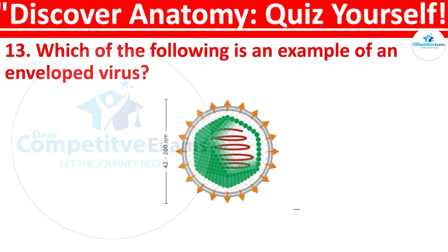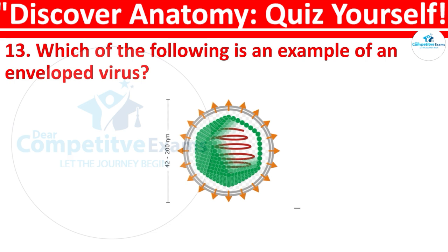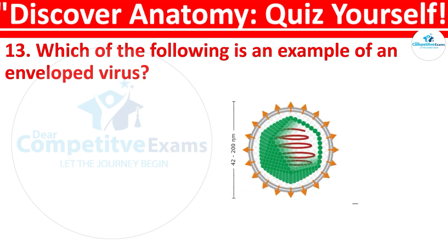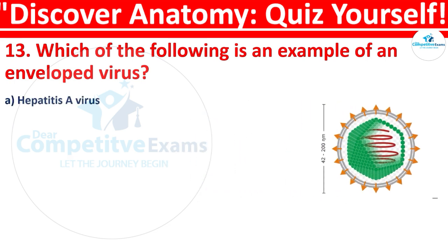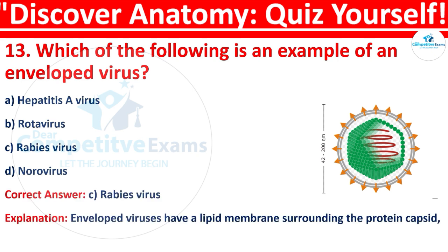Question 13: Which of the following is an example of an enveloped virus? The options are: Hepatitis A virus, Rotavirus, Rabies virus, or Norovirus. The correct answer is C, that is Rabies virus. Enveloped viruses have a lipid membrane surrounding the protein capsid, as seen in the structure of the Rabies virus.